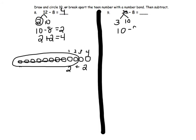10 minus 8 equals 2. We then take that 2 and add it to the remaining number, 3, and we have 2 plus 3 equals 5. So 13 minus 8 equals 5.